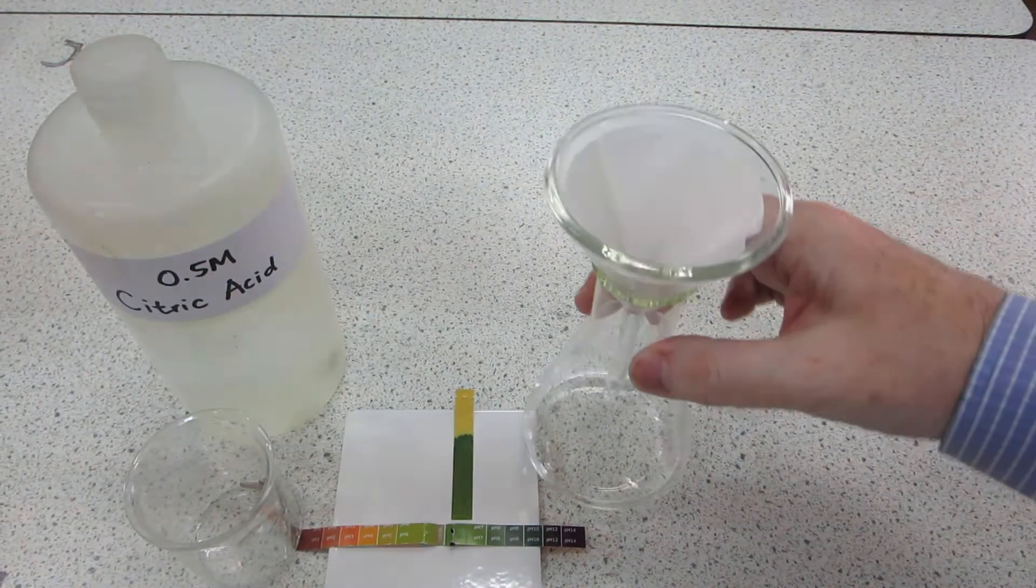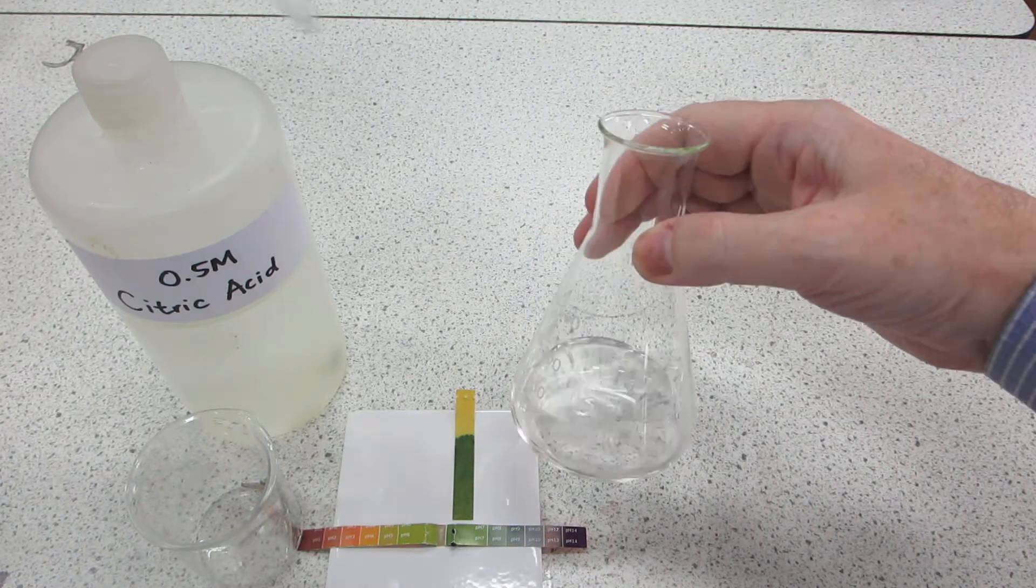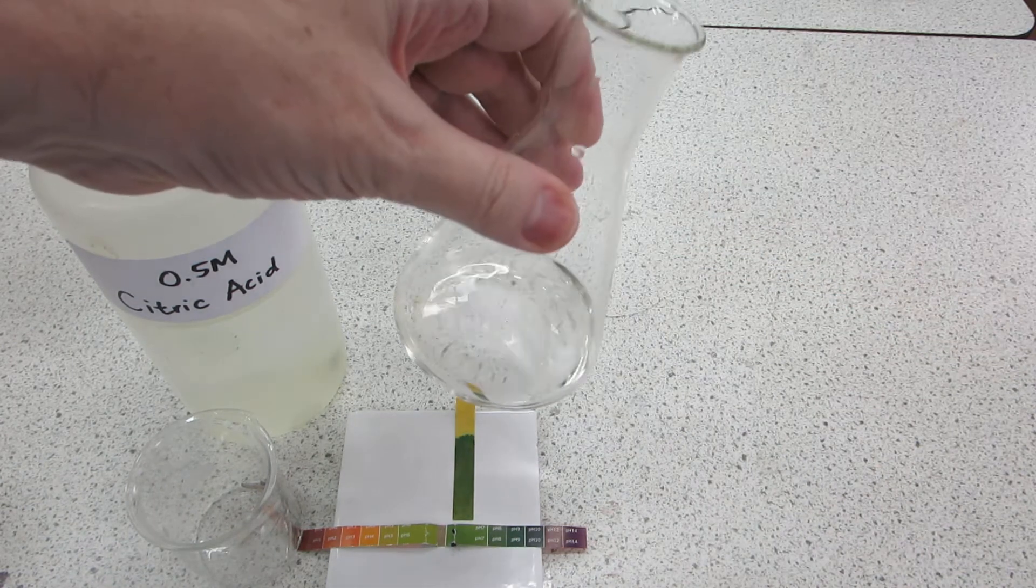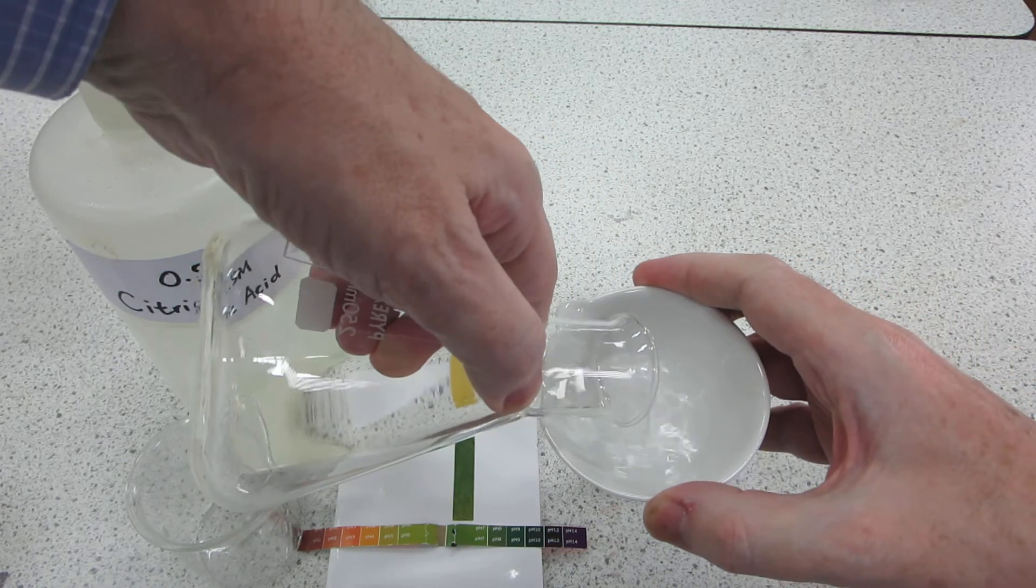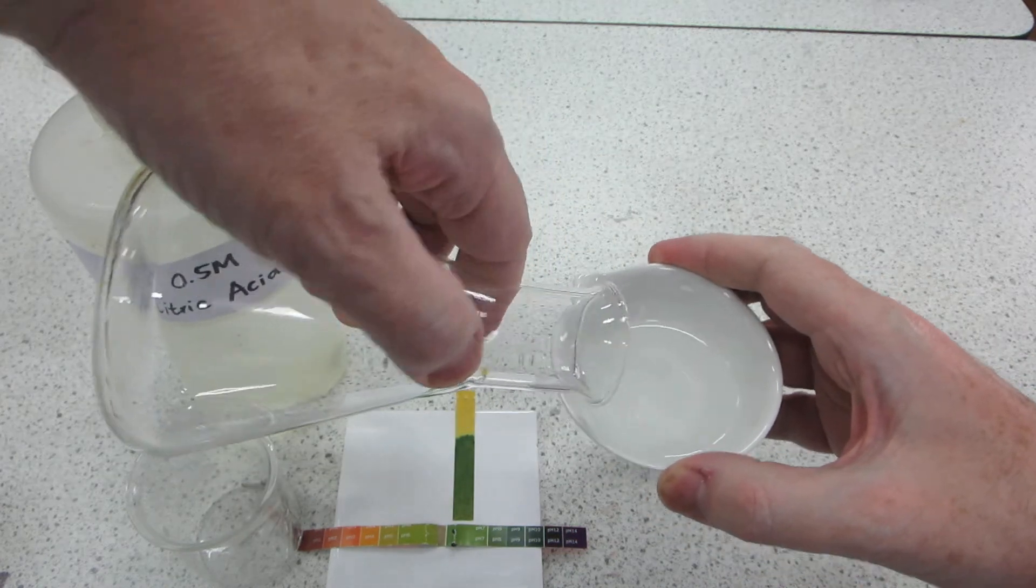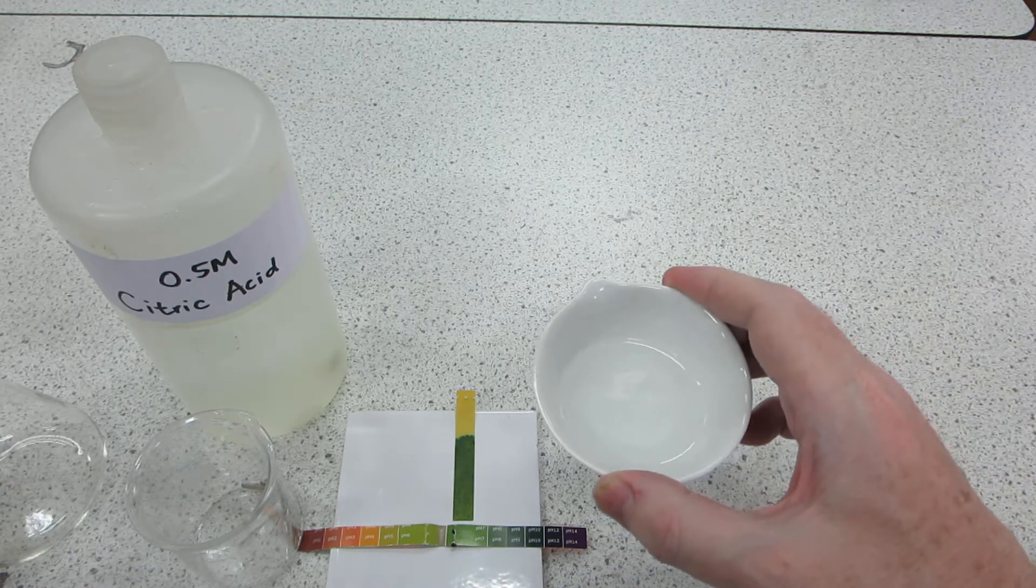Well now that the filtration is finished, the last thing to do is to place the filtrate in an evaporating basin and then place that in a low temperature oven in order to remove the water and obtain some crystals of the product.